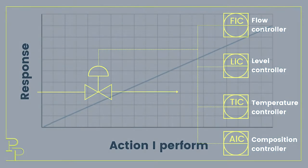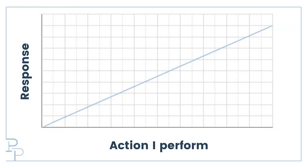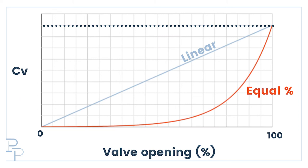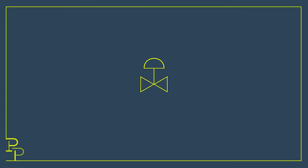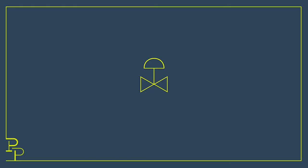So our goal is a linear response in our system to an action that we take to manipulate it. You may think: obviously I want a linear valve, because that valve behaves exactly the way we've just described. Well, yes and no. The valve characteristic is linear if you look at the valve by itself — say on a bench connected to absolutely nothing else — but when we install that valve on a system it will respond totally differently.